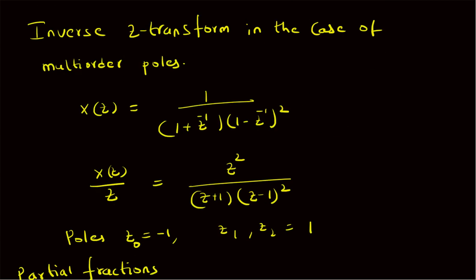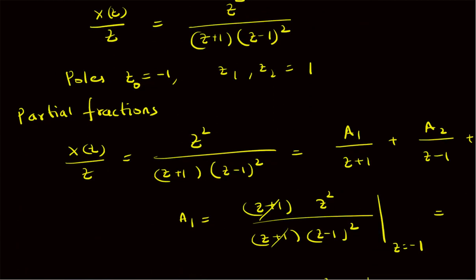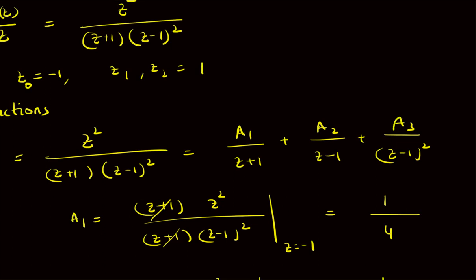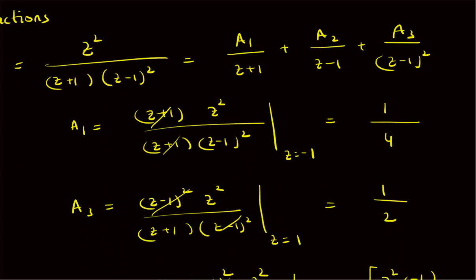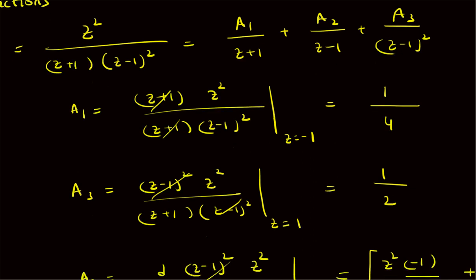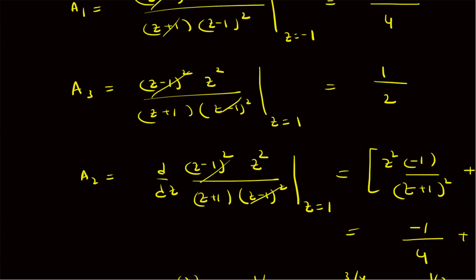In this example we looked at the inverse z-transform for the multiple order poles case — when X(z) has the structure 1/[(1+z⁻¹)(1-z⁻¹)²], meaning there is a repetition of poles. To handle this, we first write X(z)/z as a rational polynomial in positive powers of z, identify the poles, and apply partial fractions: X(z)/z = A₁/(z+1) + A₂/(z-1) + A₃/(z-1)². A₁ is found by multiplying (z+1)·X(z)/z and evaluating at z = -1, giving 1/4. A₃ is found similarly by multiplying (z-1)²·X(z)/z and evaluating at z = 1, giving 1/2. A₂ is found using the derivative of (z-1)²·X(z)/z evaluated at z = 1, giving 3/4.